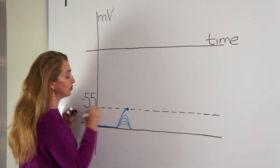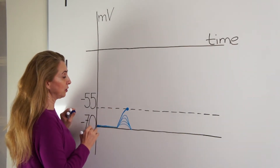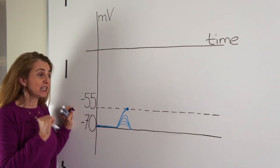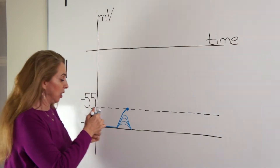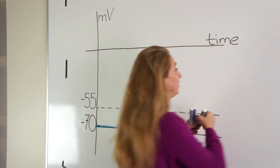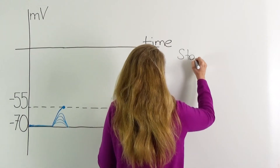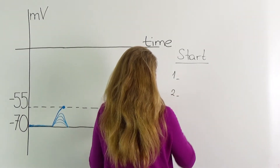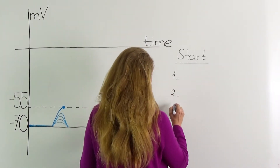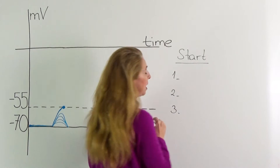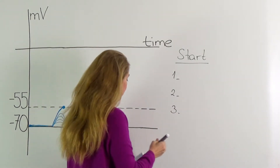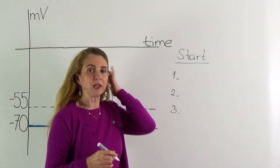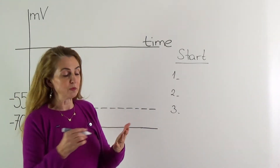When we reach the threshold for an action potential, three things start to happen. One and two happen in the voltage-gated sodium channels, and three happens in the voltage-gated potassium channel.